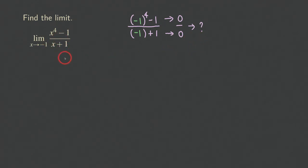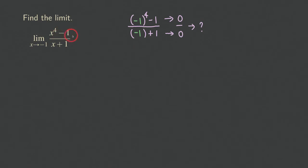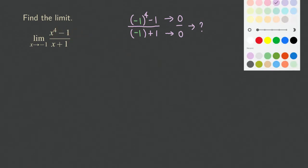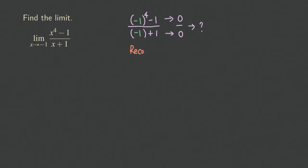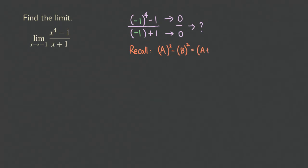So how do we deal with this problem? We will try to factor. The numerator is a binomial and it's actually the difference of two squares, so we should be able to factor it. Let's recall: if you have a difference of two squares — a squared minus b squared — then factoring gives you a plus b times a minus b.